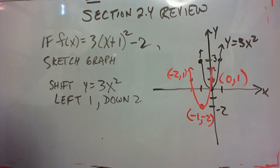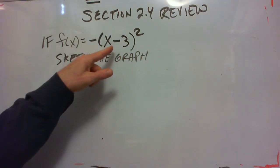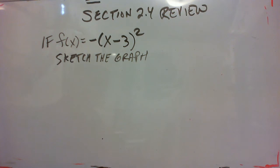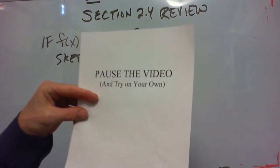Okay, now I'm going to give you one to try. And you can pause the video and try it on your own. Okay, here's the problem. If f of x is negative quantity x minus 3 squared, sketch the graph and indicate the vertex. So pause the video and try this on your own.